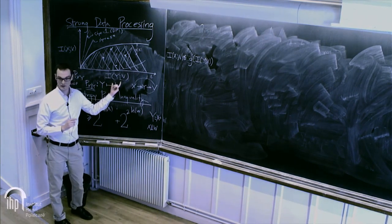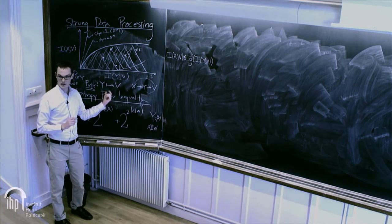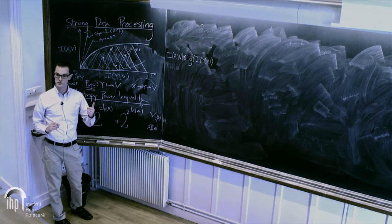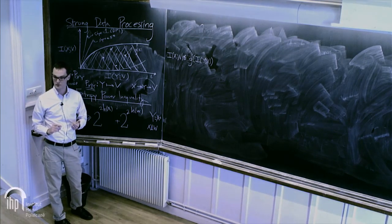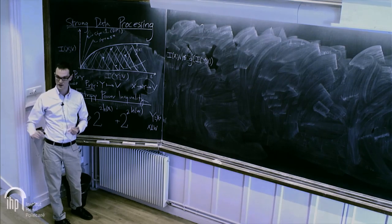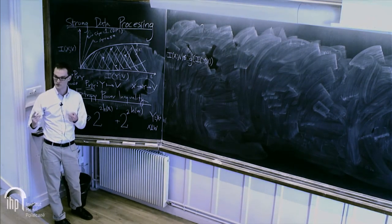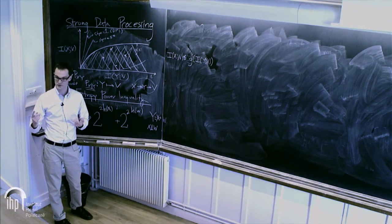Basically, if I take two different channels, I could flip a coin and use one channel with probability lambda and the other with probability 1 minus lambda. That gives a weighted combination of the mutual informations, which is why the region is convex.